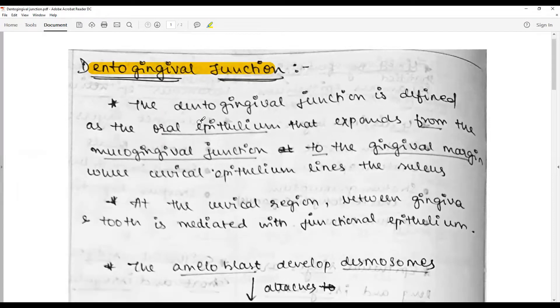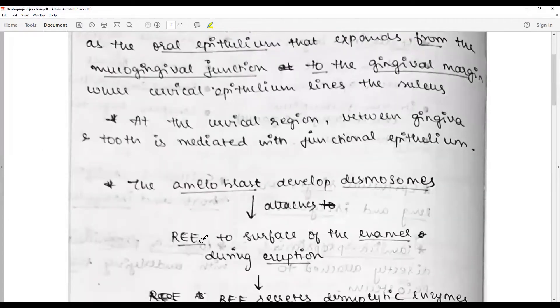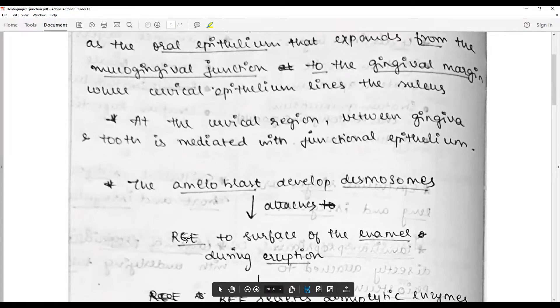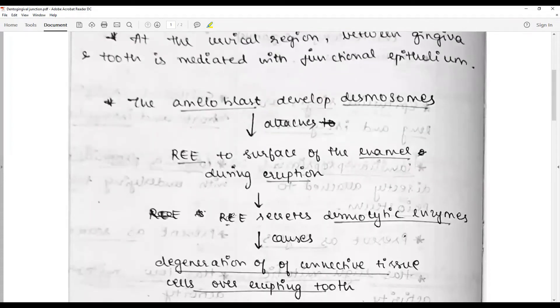The dento-gingival junction is where dentin and gingiva meet. The ameloblast develops desmosomes and attaches itself to the REE (reduced enamel epithelium) to the surface of the enamel during eruption. This reduced enamel epithelium